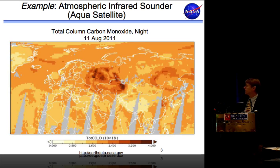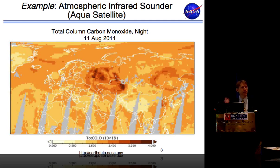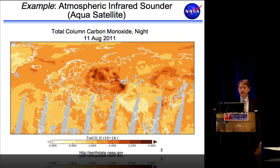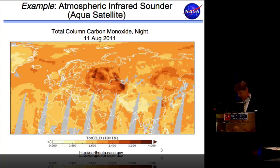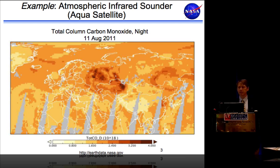Here's an example of some of the data: this is carbon monoxide from one of the sensors on the Aqua satellite called the Atmospheric Infrared Sounder. Because it's infrared, it can see a lot of interesting features at night. Here we're seeing the total column of carbon monoxide from when the Russian wildfires were causing a significant plume over Russia. You can actually see it drifting across the entire continent.